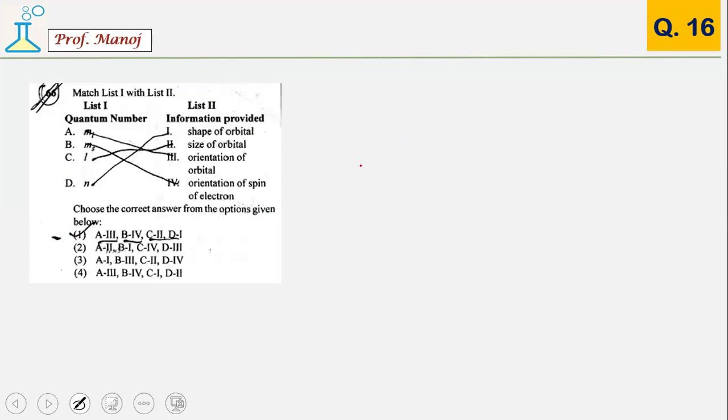A quantum number based question, very easy. The answer is 1. You have ML, spin quantum number MS, azimuthal, and principal. We know the values. A, that is 3, matches with orientation of the orbital, that's the job of magnetic quantum number. This is about spin. This is about size. And this is about shape of the orbital. Very straightforward question about quantum numbers.